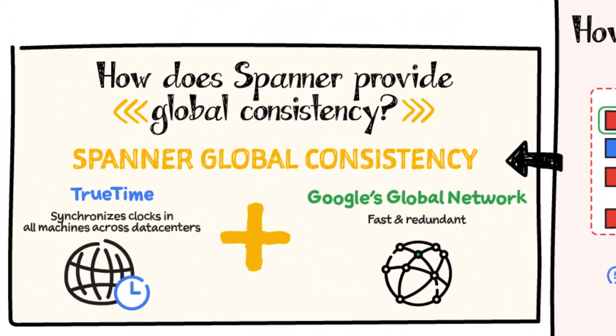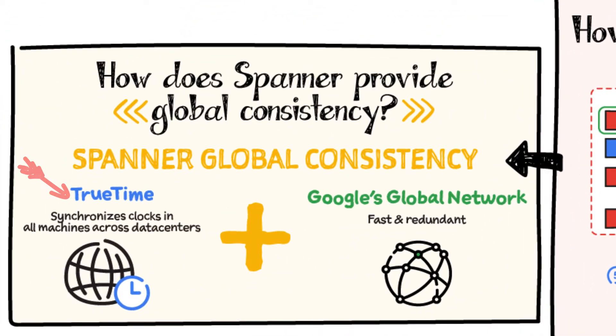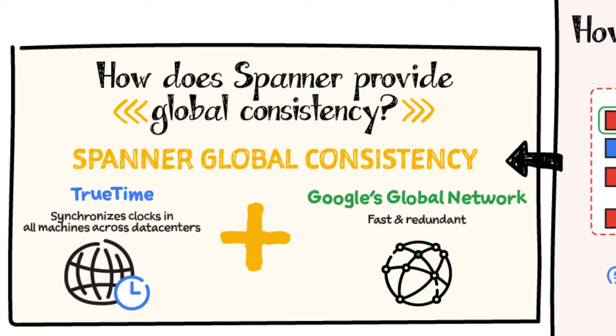How does Spanner provide global consistency? TrueTime is essential to make Spanner work as well as it does. TrueTime is a way to synchronize clocks in all machines across multiple data centers. The system uses a combination of GPS and atomic clocks, each correcting for the failure modes of the other. Combining the two sources with multiple redundancy gives an accurate source of time for all Google applications. But clock drift on each individual machine can still occur, and even with a sync every 30 seconds, the difference between the server's clock and the reference clock can be as much as two milliseconds. The drift will look like a sawtooth graph, with the uncertainty increasing until corrected by a clock sync. Since two milliseconds is quite a long duration in computing terms, TrueTime includes this uncertainty as part of the time signal. And that's how Cloud Spanner provides global consistency, high availability, and high throughput.